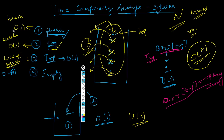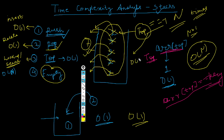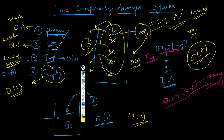For the empty function, we're just comparing whether top equals minus one, and comparison is an O(1) operation. So to recap: insert (push) is O(1), delete (pop) is O(1), search or lookup is O(n) in the worst case, and the empty function is O(1). That covers the time complexity analysis of all the basic stack operations. Hope to see you in the next video where we'll be discussing some basic questions on stacks.